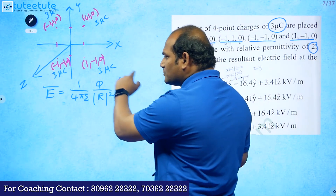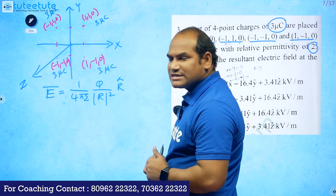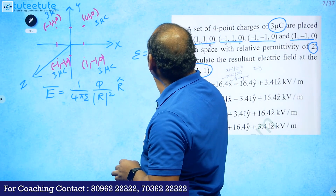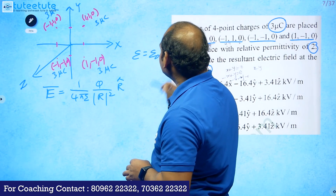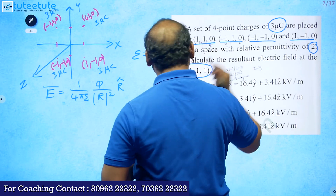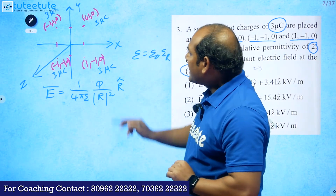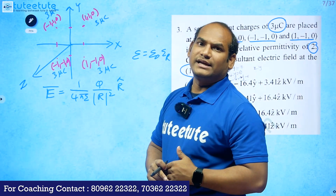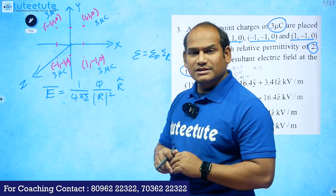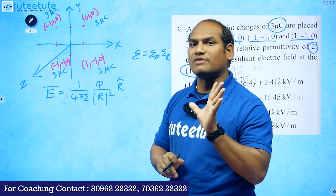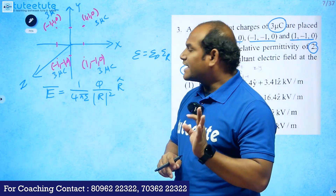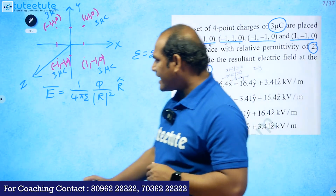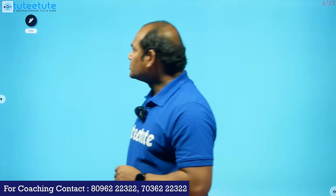Since relative permittivity is given, epsilon must be taken as ε₀ × εᵣ. The εᵣ value is two. In all four cases q equals three micro coulombs. The most important part of the calculation is determining the vector r carefully for each charge.